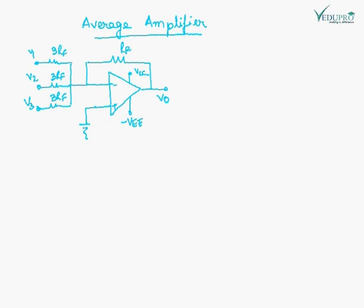The circuit to get the average of the inputs is similar, but the resistances here are 3 times the feedback resistance. The output we get will be minus of (V1 plus V2 plus V3) upon 3.